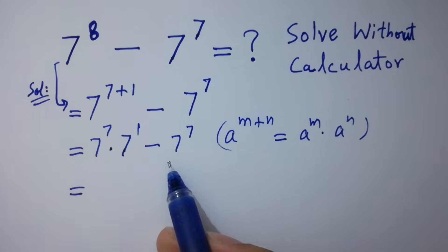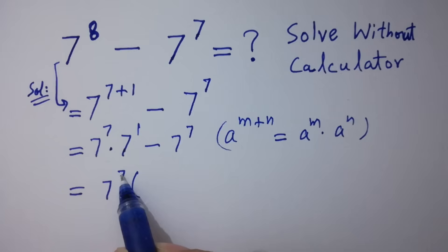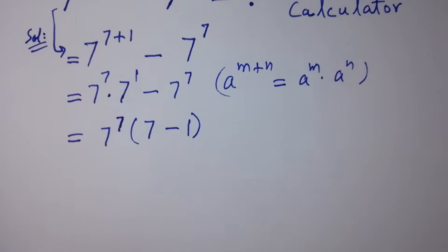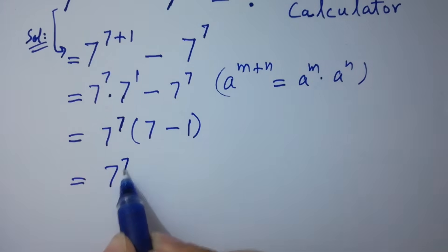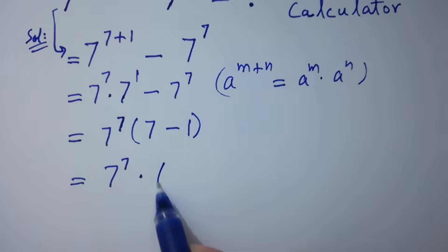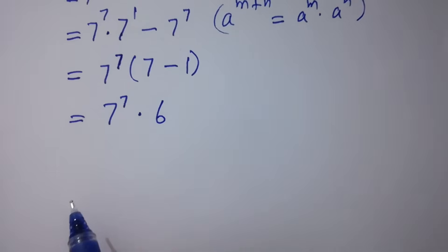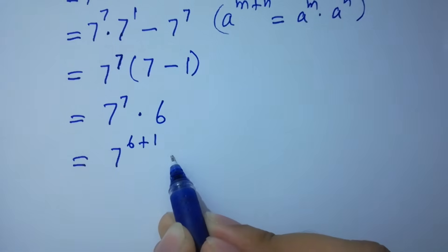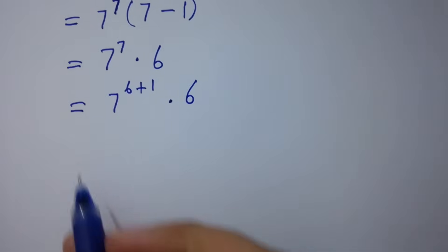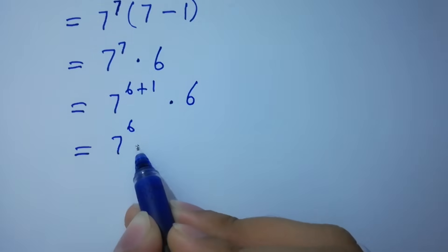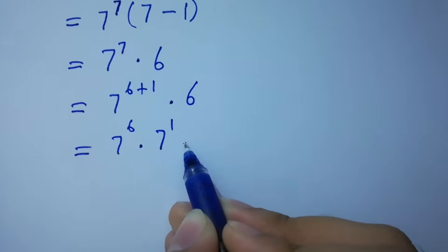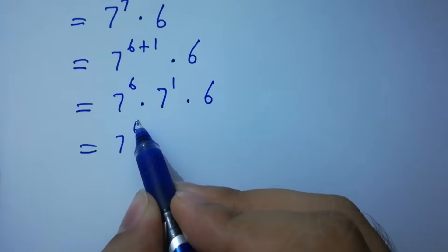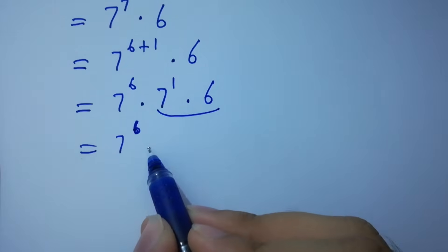Here 7 to the power 7 can be common. Then we have 7 as it is minus 1. Next, 7 to the power 7 times 7 minus 1 is 6, which is the same as 7 to the power 6 plus 1 times 6. That gives 7 to the power 6 times 7 to the power 1 times 6, and 7 times 6 equals 42.